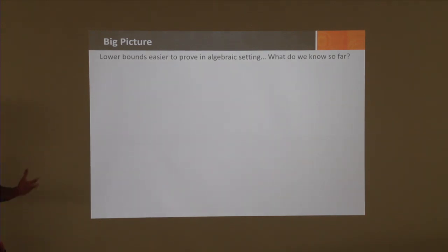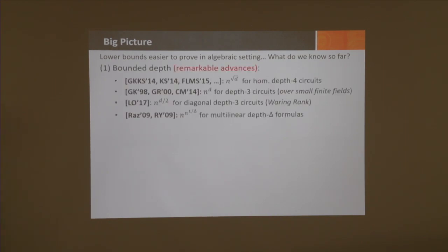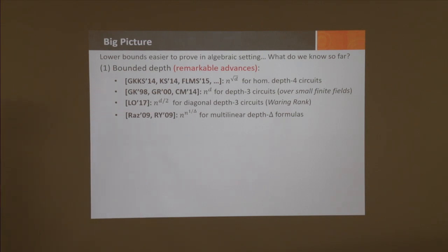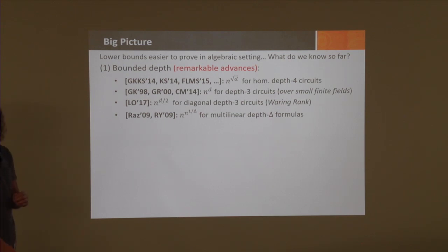Since lower bounds are easier to prove, what do we know? In the bounded depth setting we've had remarkable advances. For example, the work of Gupta, Kayal, Kamath, and Saptarishi, and Shubhangi, Mriinal, and many others, proves a lower bound of n^{√d} for homogeneous depth-four circuits—polynomials in n variables of degree d. In 1998, Grigoryev-Karpinski, and later Grigoryev-Razborov and Chilara-Mukhopadhyay, proved a lower bound of n^d for depth-three circuits over small finite fields.